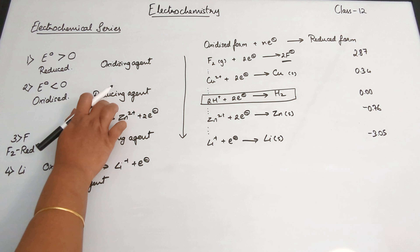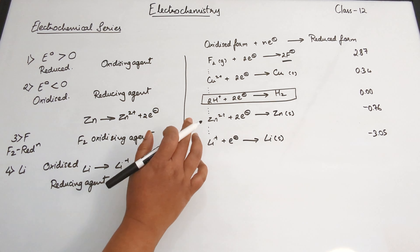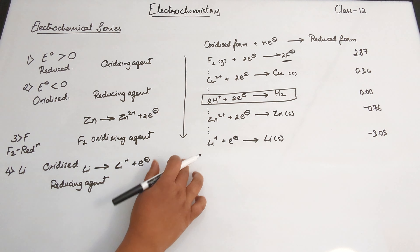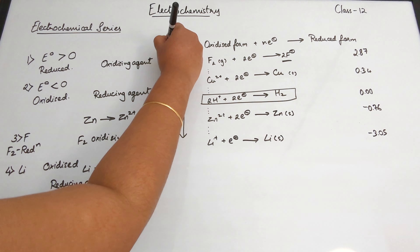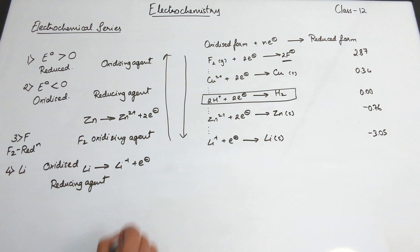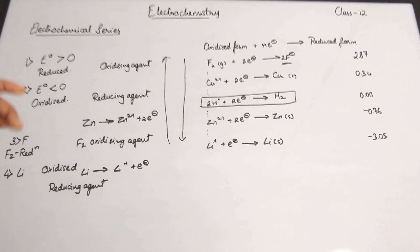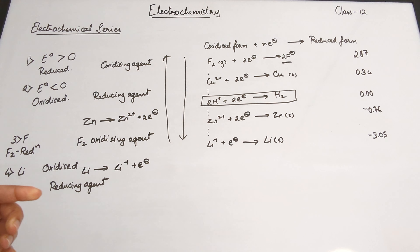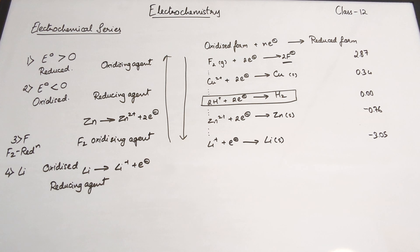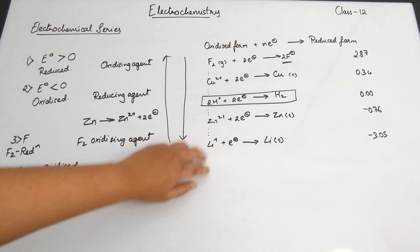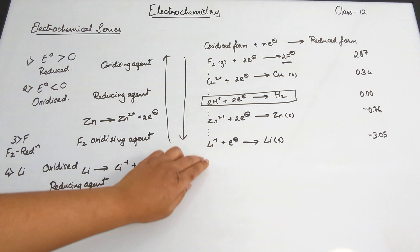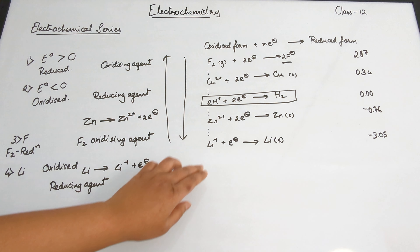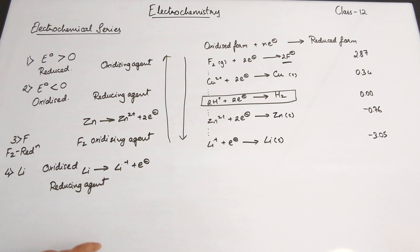F⁻ may not make a very good reducing agent because it does not want to undergo oxidation. On the other hand, lithium has the lowest value of the standard electrode potential, which is minus 3.05.